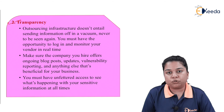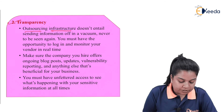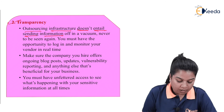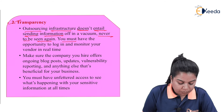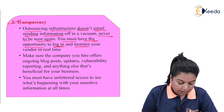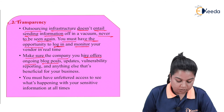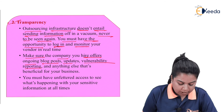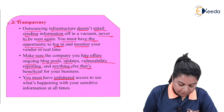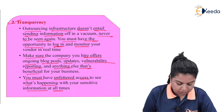The second point an enterprise should work on is transparency. Outsourcing infrastructure does not entail sending information off in a vacuum never to be seen again. You must have the opportunity to log in and monitor your vendor in real-time. Make sure the company you hire offers ongoing blog posts, updates, vulnerability reporting, and anything else that's beneficial for the business. You must have unfettered access to see what is happening with the sensitive information at all times.